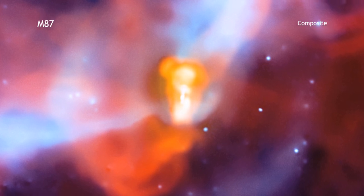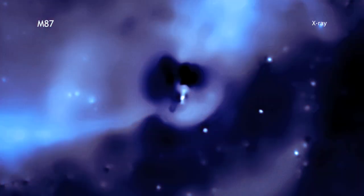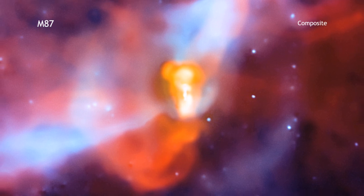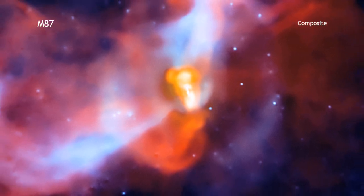This composite image from NASA's Chandra X-ray Observatory, with radio data from the Very Large Array, shows a cosmic volcano being driven by a black hole in the center of the M87 galaxy.